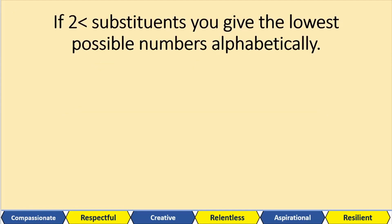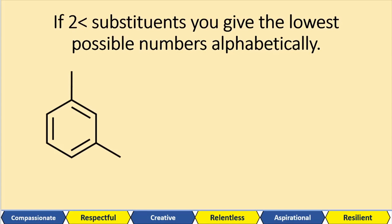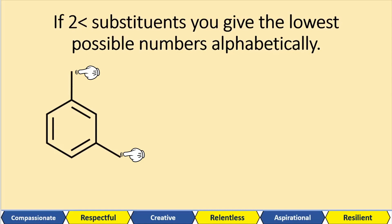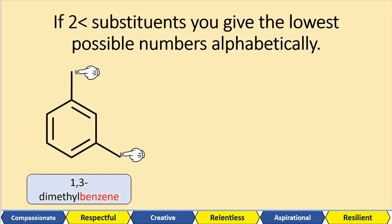If there are two or more substituents, you give the lowest possible numbers alphabetically. Here we've got two methyl groups. So let me use one as my position one. We've got positions one, two, three — so that's 1,3-dimethylbenzene. Because we've got two methyl groups, we have to say 'di' — just like carbon dioxide has two oxygens. So we've got 1,3-dimethylbenzene.